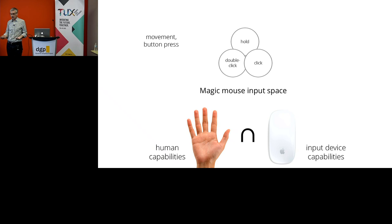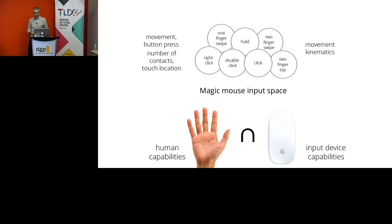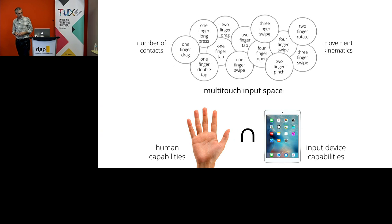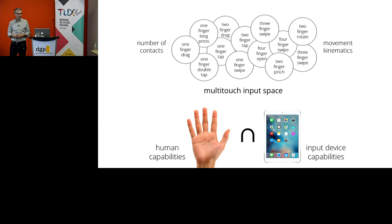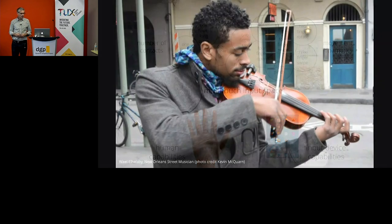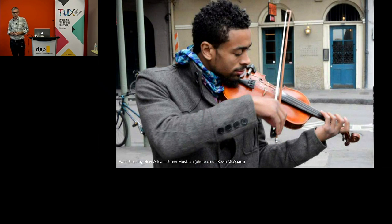And the hope is that by increasing this input space, we're making people even more productive. People can get more things done more quickly if you can communicate your intentions to the computer more efficiently. Of course, no one uses a mouse anymore — well, of course they do — but an even more popular input device are tablets and multi-touch devices, where the input space is quite big and closer to human capabilities in terms of number of contacts and ways of using fingers.